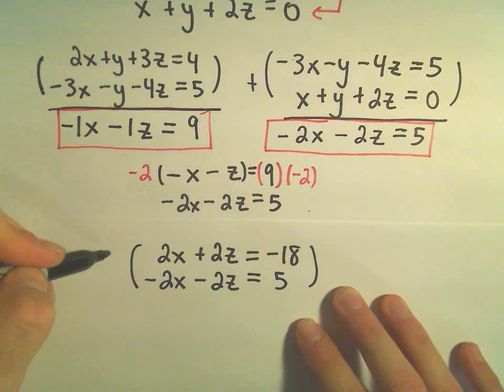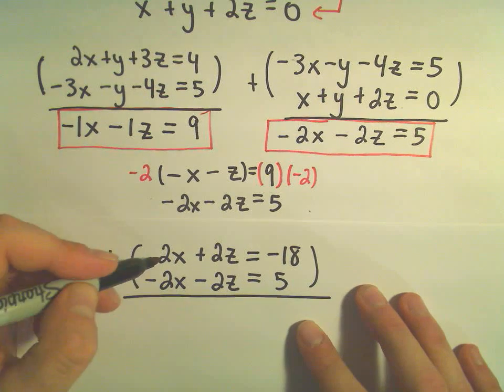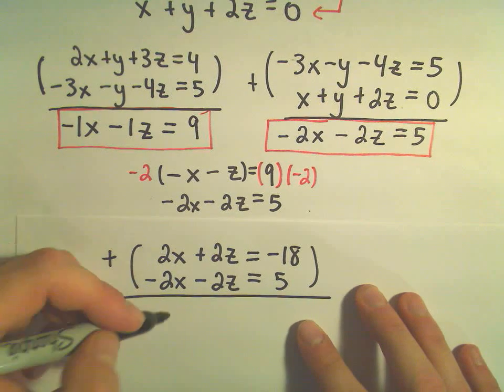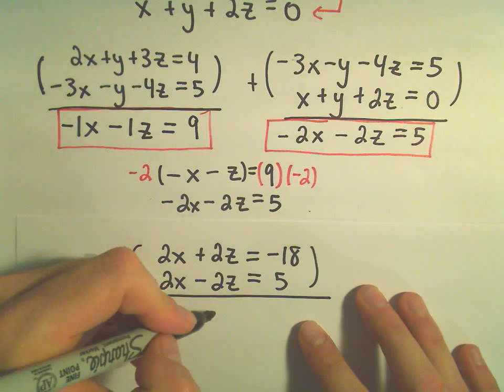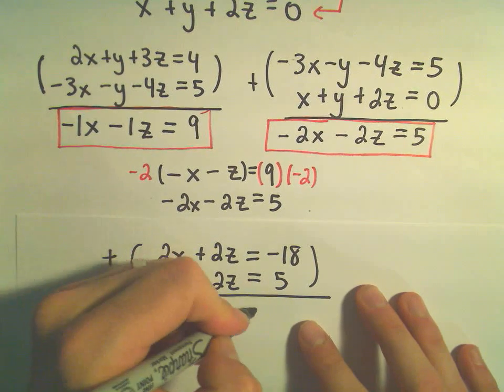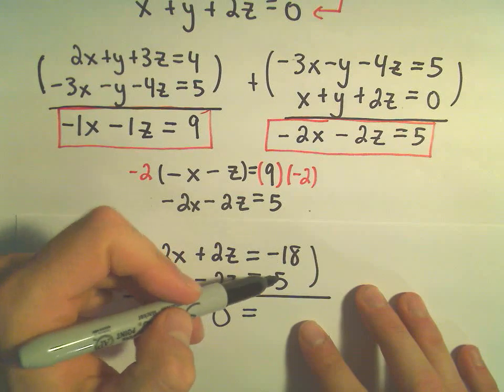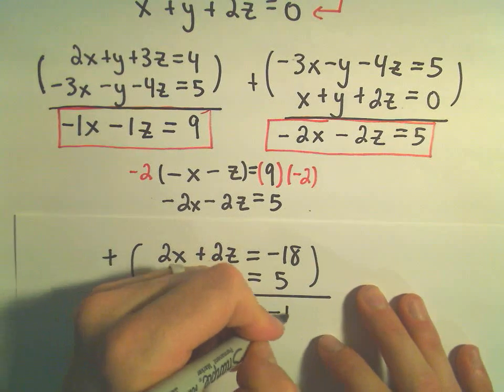But notice now, if we do our elimination by addition, we get 2x plus negative 2x. Well, that's 0x. 2z plus negative 2z is 0z. So, we've got 0 on the left. Negative 18 plus 5 is going to be negative 13.